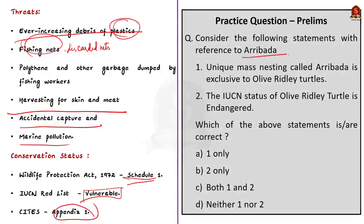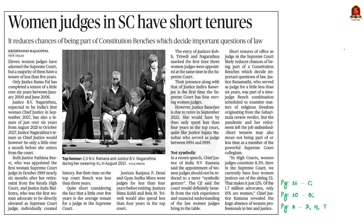Olive ridley turtles are protected under Schedule One of the Wildlife Protection Act 1972, listed as Vulnerable on the IUCN Red List, and protected under Appendix One of CITES.